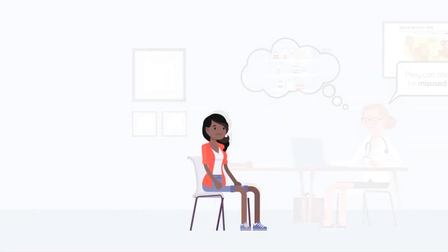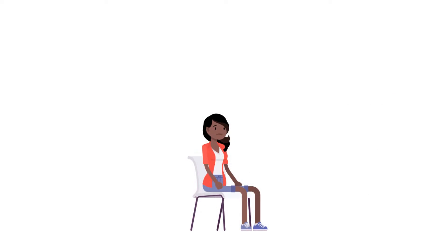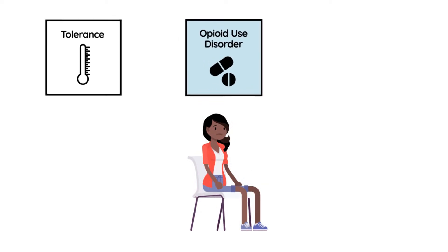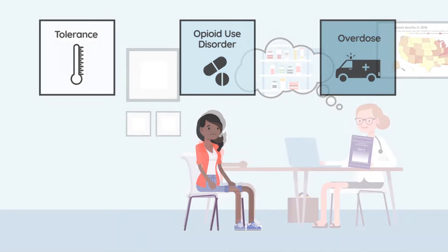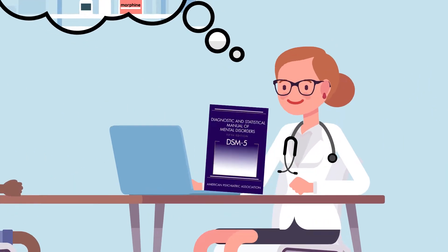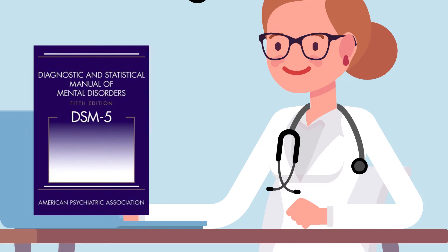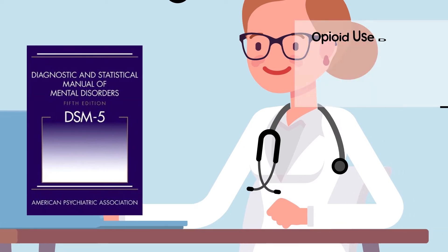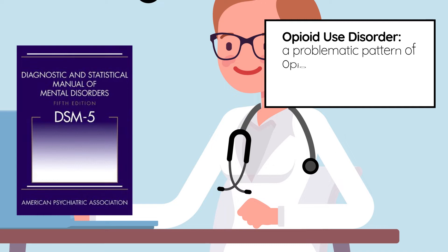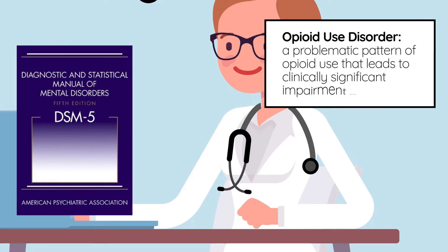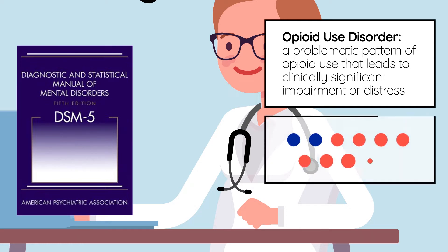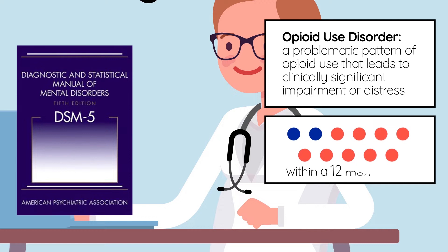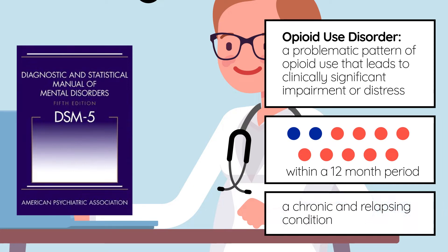Illicit use, and even regular use as prescribed by a healthcare provider, may lead to tolerance, opioid use disorder, or overdose. According to the American Psychiatric Association's Diagnostic and Statistical Manual of Mental Disorders, 5th edition, opioid use disorder is a problematic pattern of opioid use that leads to clinically significant impairment or distress. It requires patients to meet at least two of 11 established criteria within a 12-month period. It's important to understand that OUD is a chronic and relapsing condition and should be treated accordingly.